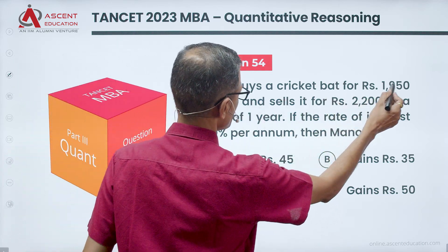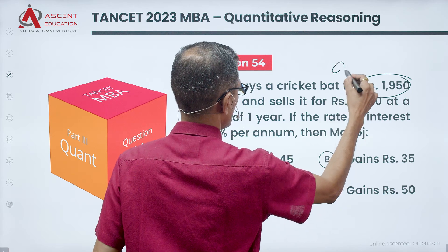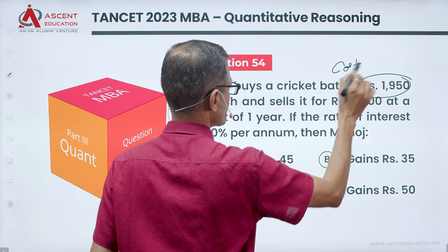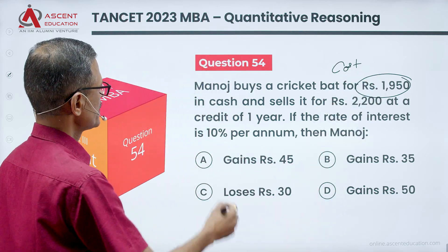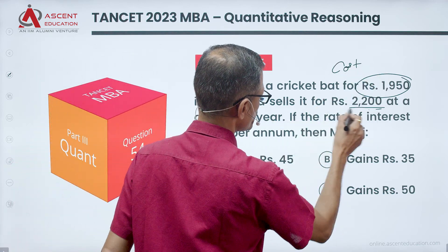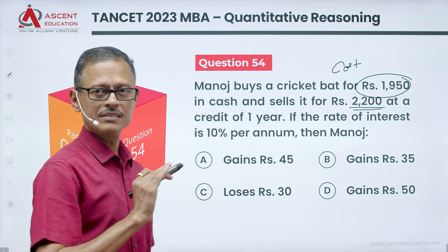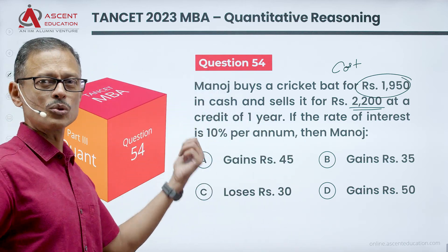Manoj buys a cricket bat for ₹1950. The cost of the bat is ₹1950, and he sells it for ₹2200 at a credit of one year.